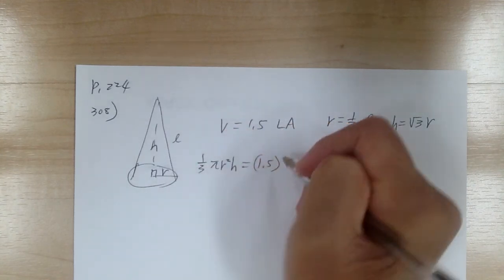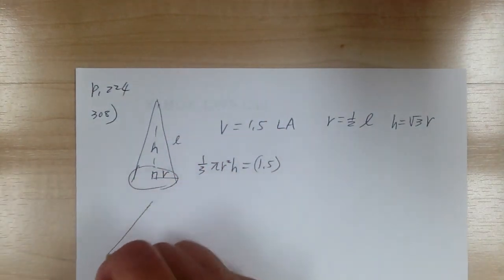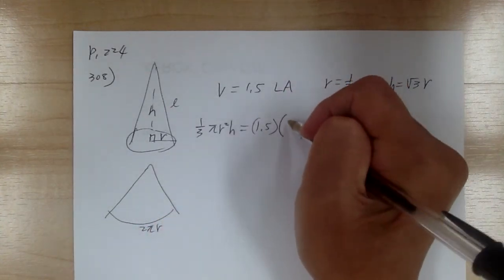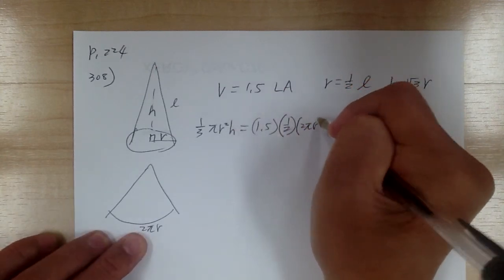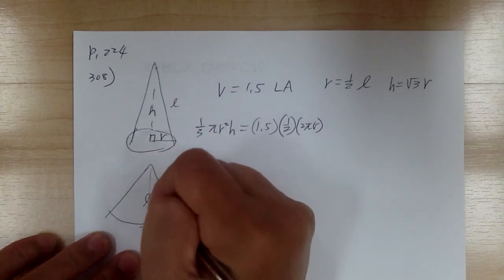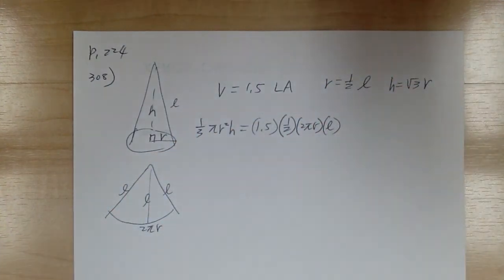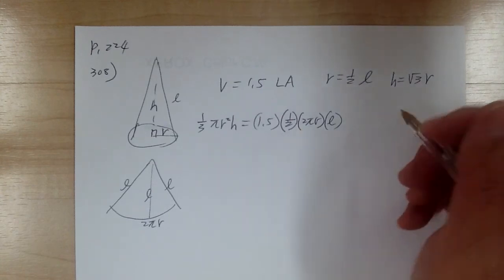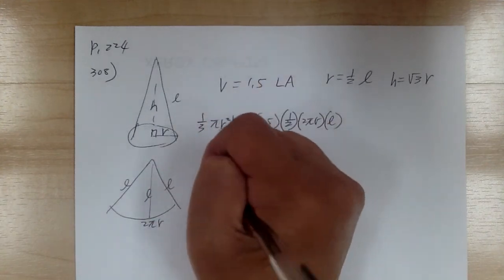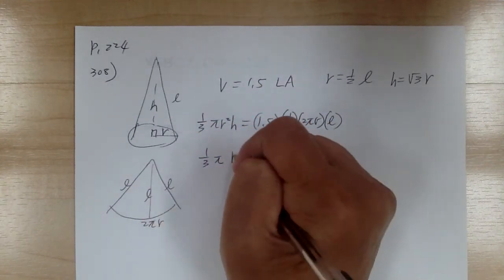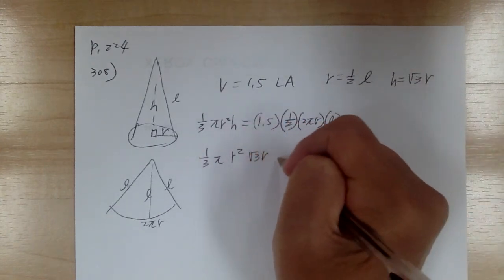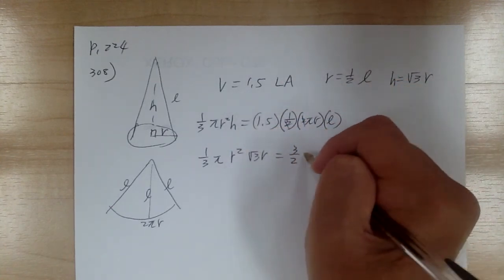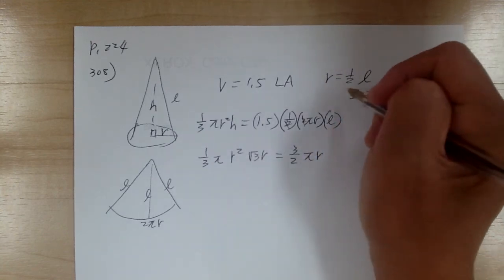The volume equals 1.5 times the lateral area. The lateral area is the side — if you open it up, it becomes a shape with base 2πr. Think of it as a triangle, so the area would be one-half times base 2πr times the slant height L. Substituting: one-third π r² times √3r equals 1.5 times one-half times 2πr times L. This cancels out. Making 1.5 into 3/2, and from here you can see L equals 2r.